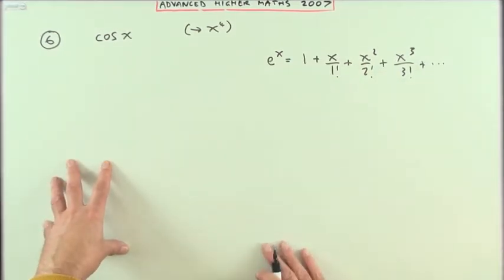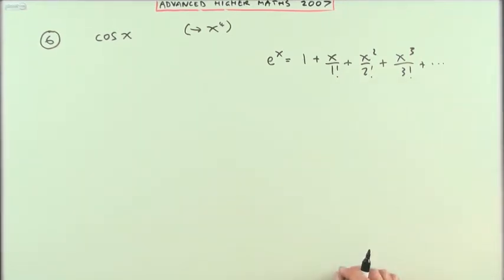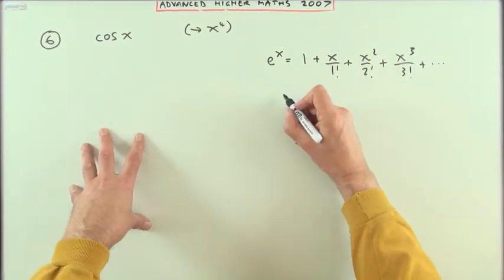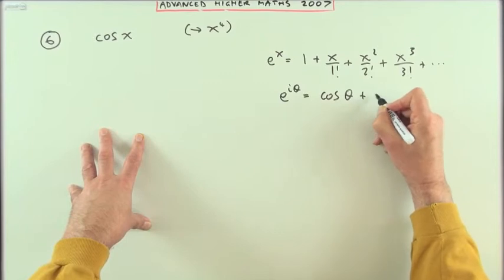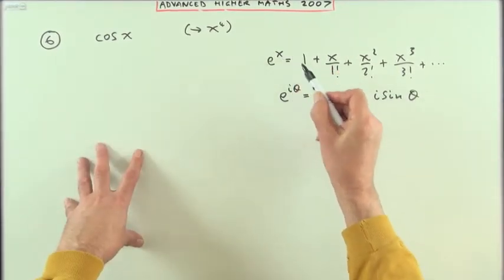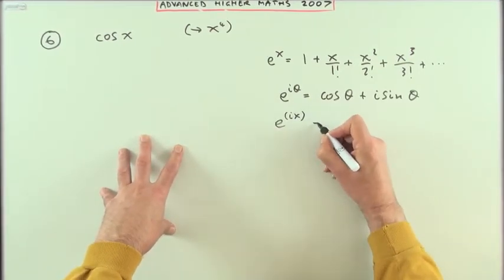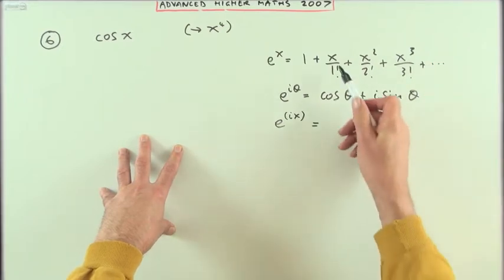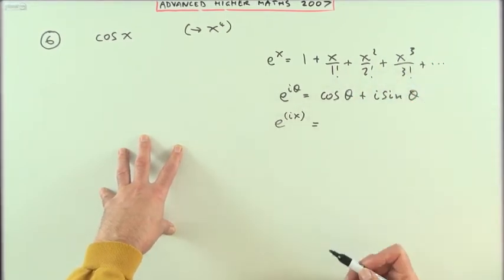And from that the sine and the cosine just use alternating terms of those from the Euler equation, e to the i theta equals cos theta plus i sine theta. So replacing x with ix, you would have e to the ix would be simply those with each of the x's replaced with an ix, so there's just going to be various powers of i appearing through them.